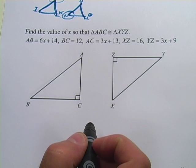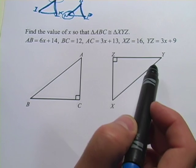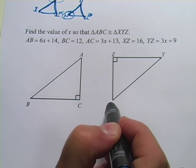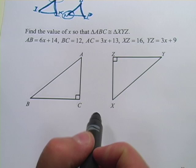This one says find the value of x so that triangle ABC is congruent to XYZ. And we have to be a little careful here. Notice ABC and XYZ, it's like they've been moved around a little bit or flipped over. So you have to be careful, their orientation is different.